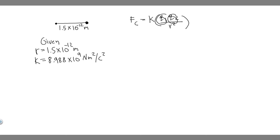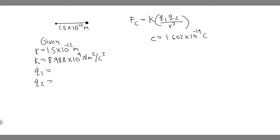Then what's Q1 and Q2? These are the charges of both particles. We're doing this between the iron nucleus and its innermost electron. So Q1 is going to be the nucleus and Q2 is going to be the electron. They tell us the charge of the nucleus is equal to 26e — basically 26 times the charge of an electron. All electrons have the same charge. So Q1 is 26 times the charge of an electron.